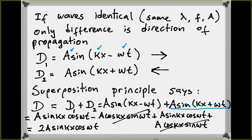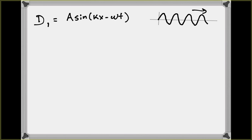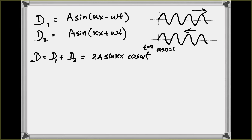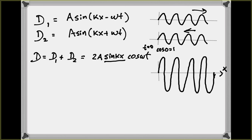This is what the math tells us happens when we add two waves moving in opposite directions. At t = 0, cosine(0) = 1, so the function reduces to 2A sine(kx) — a sine function, but with a bigger amplitude of 2A compared to the individual waves.